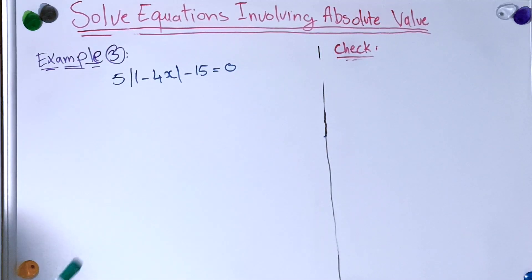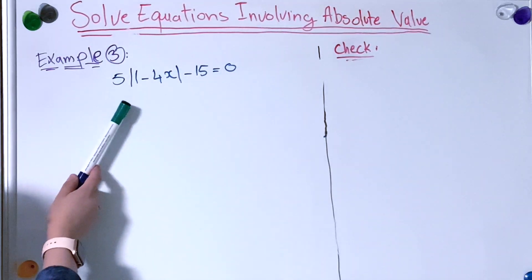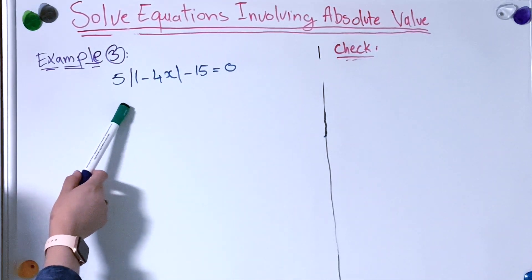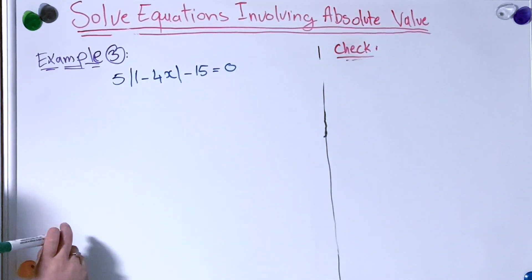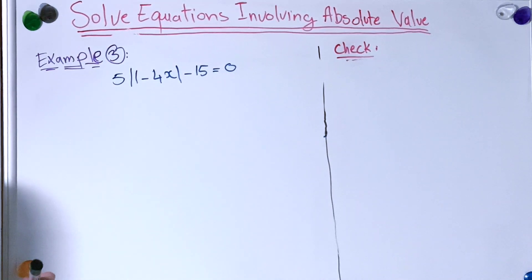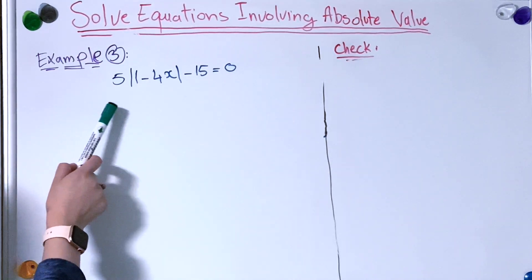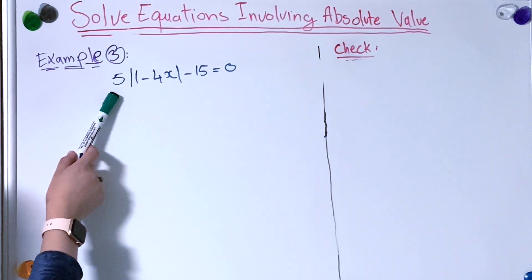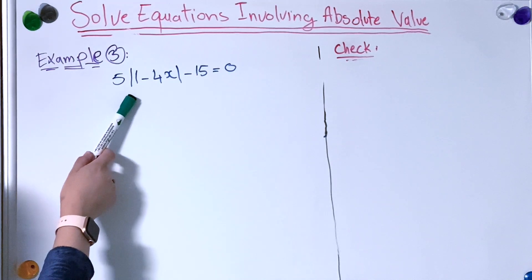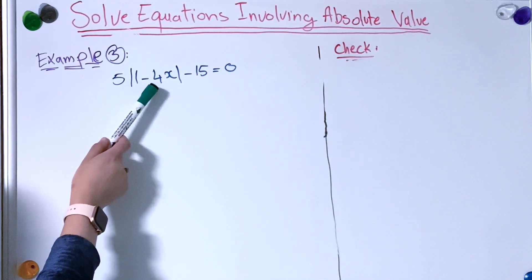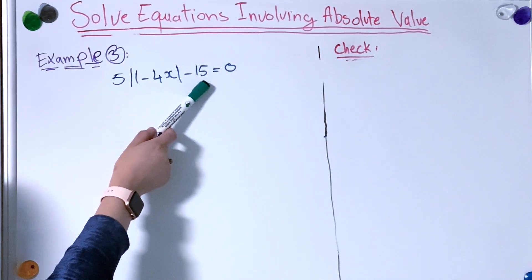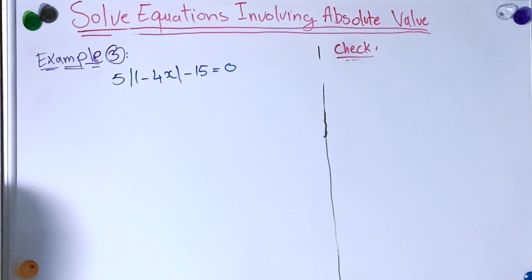Now we have a different example. I would like you to stop the video and try it by yourself, then come back to check your answer. We have 5 multiplied by the absolute value of 1 minus 4x, minus 15, equal to 0.